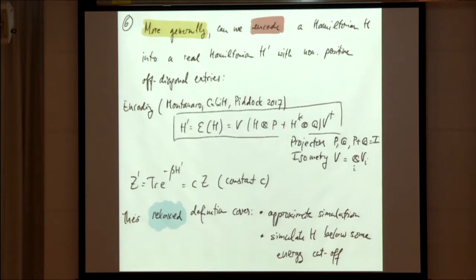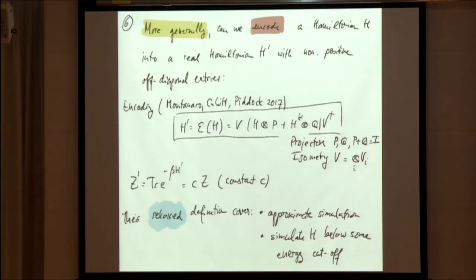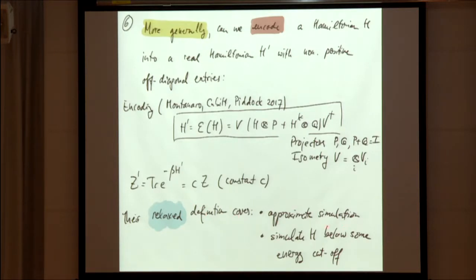The encoding takes H tensor with some projector P, plus H* (the complex conjugate) tensor Q, and then allows V's which are product isometries acting on all qubits of the original system, where these projectors sum to the identity. You can show that if you have that encoding, the partition function Z'(H') is related to Z by some constant. They also have a more relaxed definition including approximate simulation with errors, and where you encode H only below some energy cutoff — so you may only capture features of your Hamiltonian below some energy threshold.